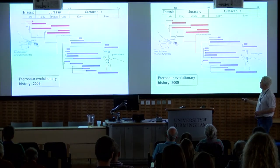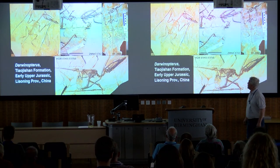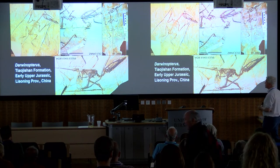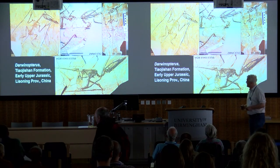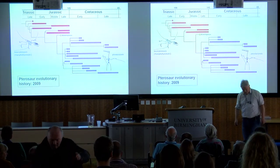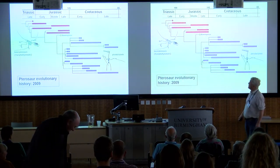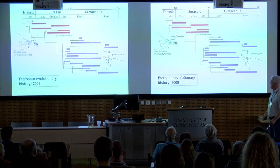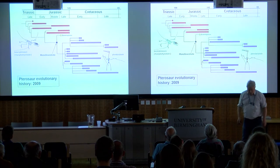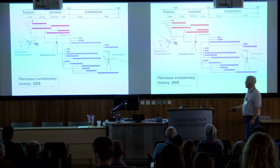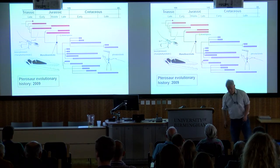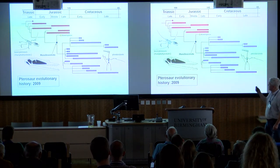Happily, along came Darwinopterus from the earliest upper Jurassic Tiao Jishan formation of Liaoning in China, and this very neatly sat both in the temporal and phylogenetic gap between basal pterosaurs and pterodactyloids, which is very pleasing. It actually forms a clade with pterodactyloids called Monofenestrata, typified by, for example, the confluent nasal and antorbital openings.